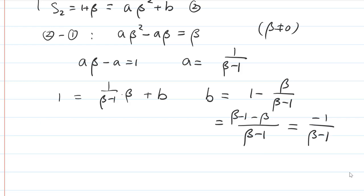So we put them back and then we see Sn is equal to, A is 1 over beta minus 1 times beta to the n, and then B is negative 1 over beta minus 1. And if we put them together, that's beta to the n minus 1 over beta minus 1. If you remember, that's exactly the formula for the sum of geometric series.